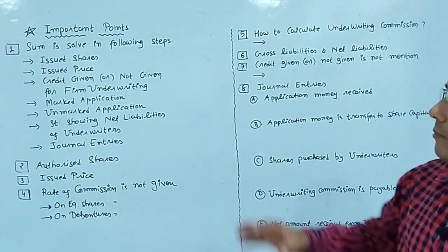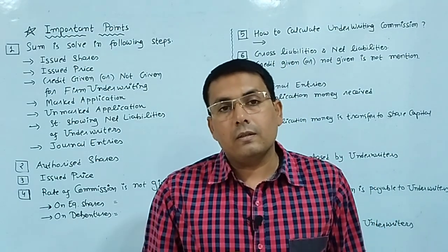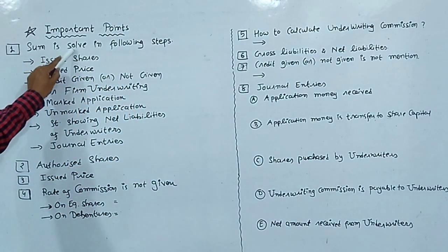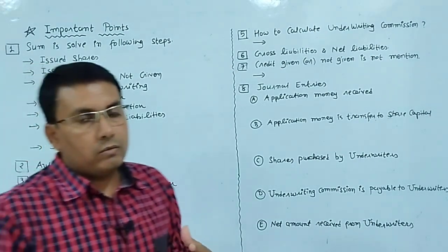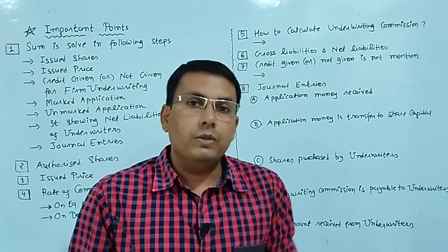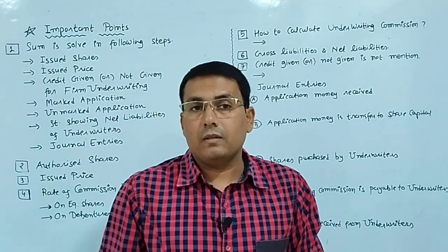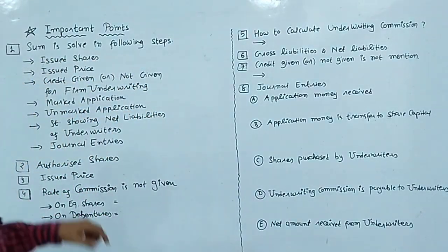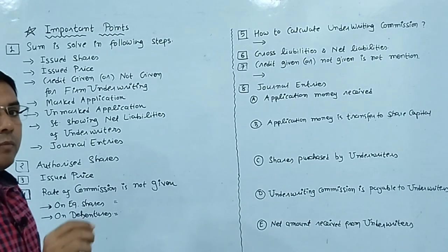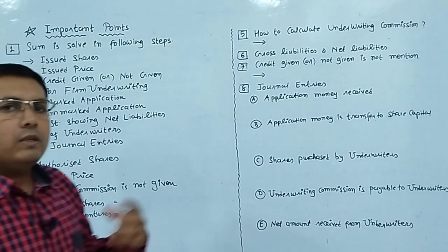You can see I have already noted down many important points here, and we are going to discuss each point one by one. A sum in this chapter is solved in the following steps. The 14-mark sum that comes in the university exam — first you need to know the issue sets, how many shares the company has issued, and second, the issue price.